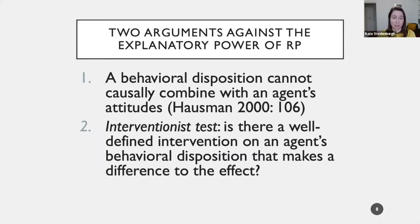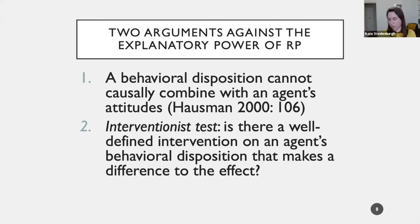There's a second source of skepticism I call the interventionist test. You might wonder: if you think of a revealed preference as a behavioral disposition, it seems clear that in order to change what an individual is choosing, you'd have to intervene on or change their attitudes. Given that fact, the behavioral disposition isn't doing the causal explaining — it's the underlying psychological attitudes that are.